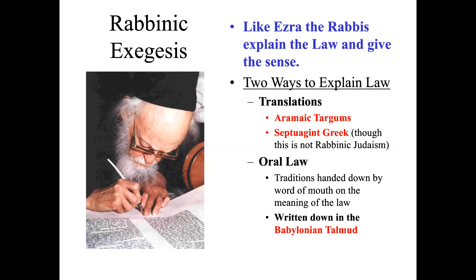The need to translate the Old Testament into Aramaic for Jews returning from Babylonian exile resulted in a translation called the Aramaic Targums — early translations of the Hebrew Old Testament into Aramaic. These Targums often paraphrase, giving more interpretation than simply literal translation. There are two major traditional Targums: the Targum of Onkelos, which translated the first five books of the Old Testament (the Torah or Pentateuch) into Aramaic, and the Targum of Pseudo-Jonathan, which translates the Book of the Prophets into Aramaic. These are the classic ones that traditional Jews study to this day.